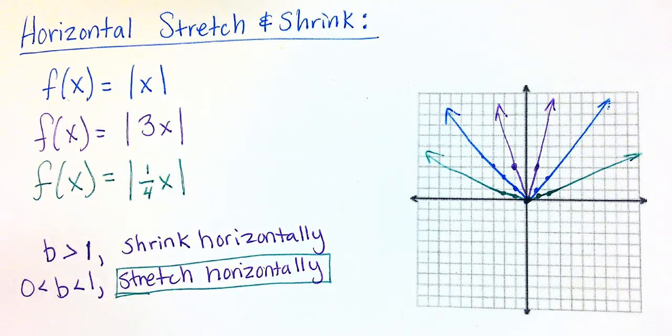This is the absolute backwards of our vertical stretch and shrink. So our vertical stretch and shrink, if it's on the outside, but greater, it's stretching. And if it's smaller or in between 0 and 1, it's shrinking.